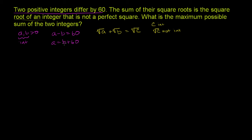If we can maximize b and find an a that fits these constraints, and get them as big as possible, then the sum of a and b will also be maximized. To simplify, the really confusing part is that c is an integer but the square root of c is not an integer. So let's just square both sides of this equation.